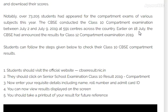How to download the results: students should follow these steps. Visit the official website cbseresult.nic.in, result.gov.in, or cbse.nic.in — I will provide the link in the description. Click on 'Senior School Examination Class 10th Result 2019 Compartment.' Enter your requisite details including name, roll number, and admit card number. You can then view the result displayed on the screen and take a printout for future reference.